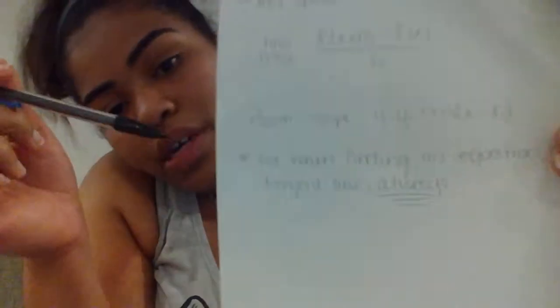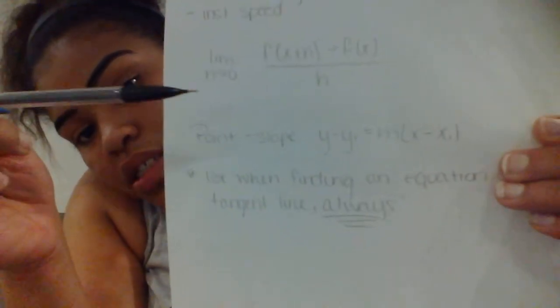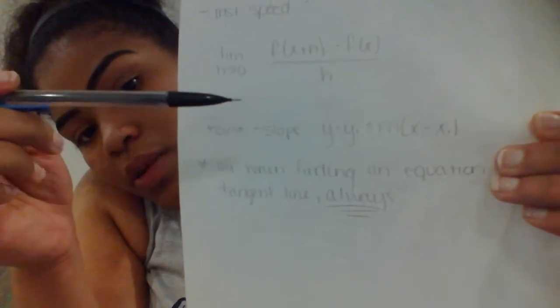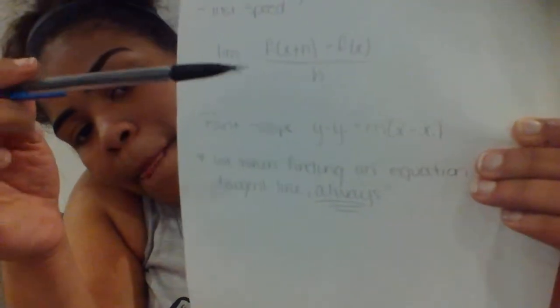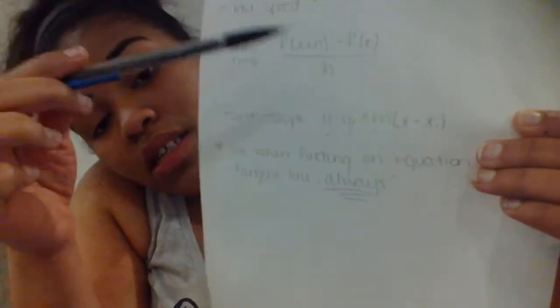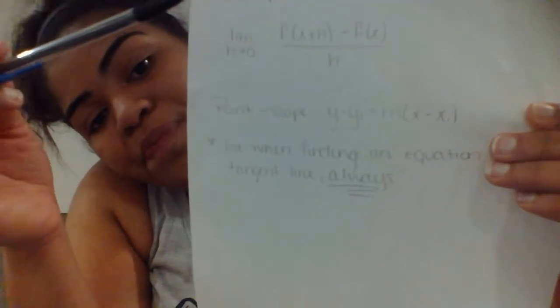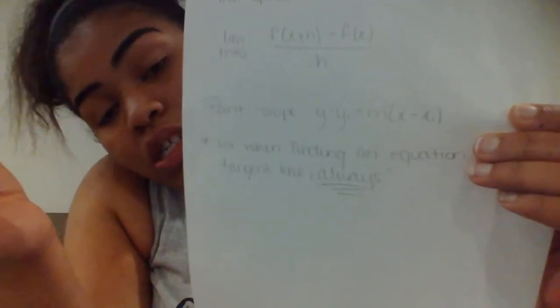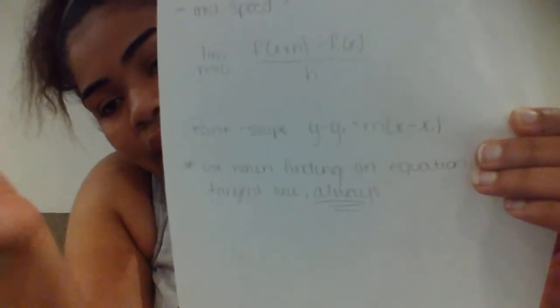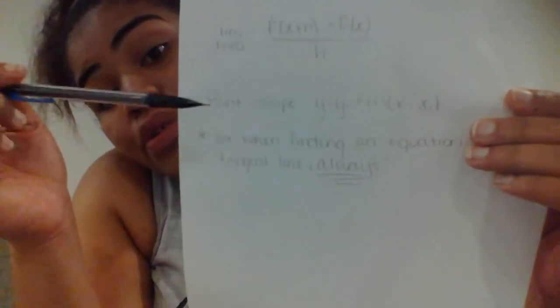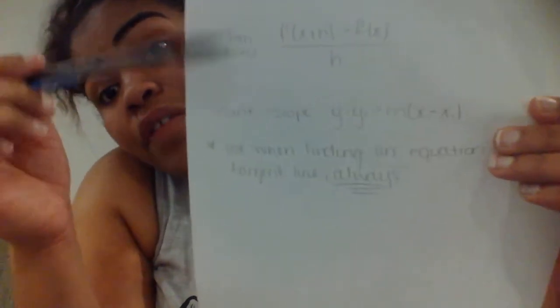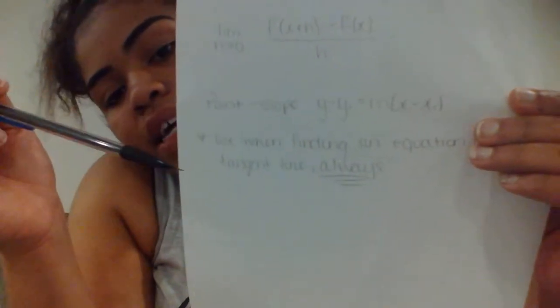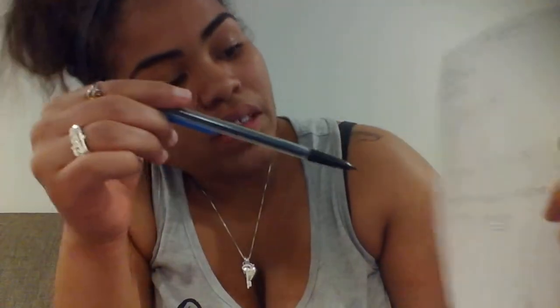We also will use the point-slope rule, which is y minus y1 equals m, which is your slope, times the quantity of x minus x1. When you find y and x — which is basically just a point — you use both of these when you're finding the slope of a tangent line or the equation of a tangent line.